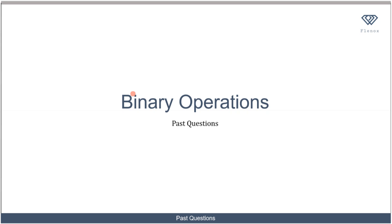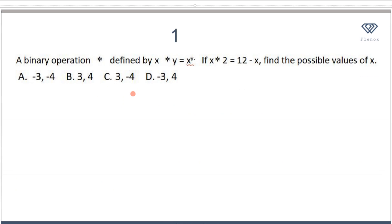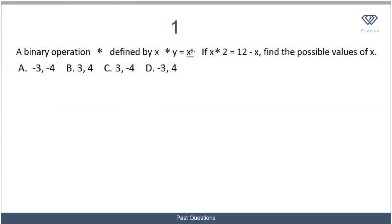Now we're going to be looking at some past questions so we can see how to apply the concepts that we have learned. For the first question, we are told that a binary operation star is defined by x★y = x^y. If x★2 = 12 minus x, find the possible values of x.